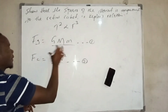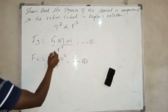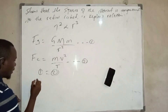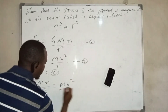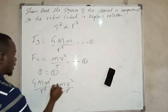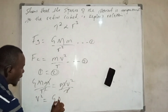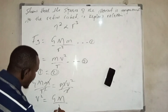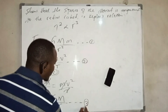Since both are forces, equation one equals equation two: Fg equals Fc. So we have GM over r² equal to mv² over r. The m's cancel and one factor of r cancels, giving us v² equals GM over r. Let us call this equation number three.